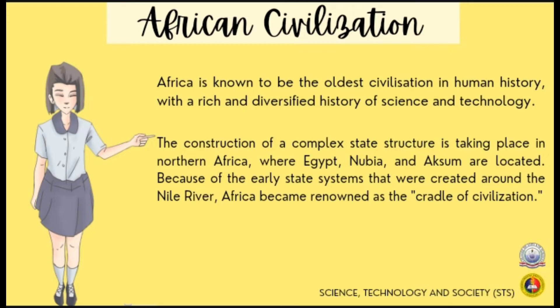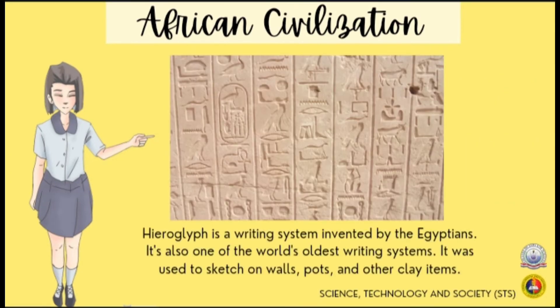Africa is known to be the oldest civilization in human history, with a rich and diversified history of science and technology. The construction of complex state structures took place in Northern Africa, where Egypt, Nubia, and Axum are located. Because of the early state systems created around the Nile River, Africa became renowned as the Cradle of Civilization — any location where civilization is understood to have independently emerged. Hieroglyphs, a writing system invented by Egyptians, were used to sketch on walls, paths, and other clay items, and are also the world's oldest writing systems.